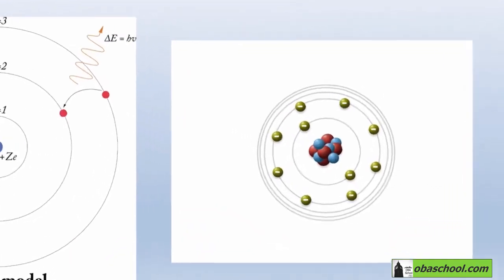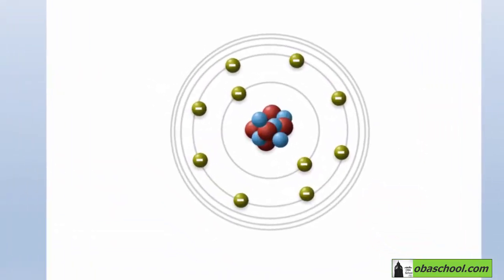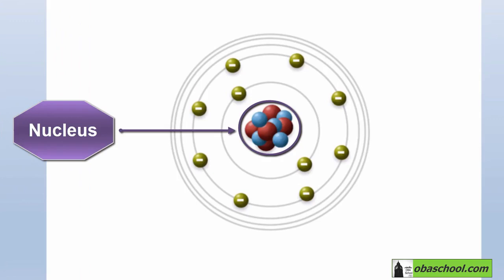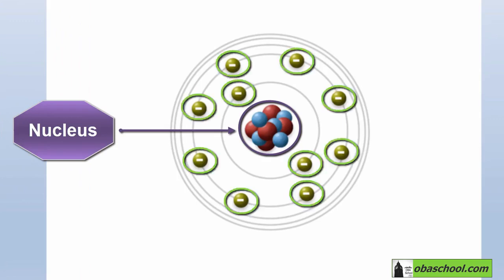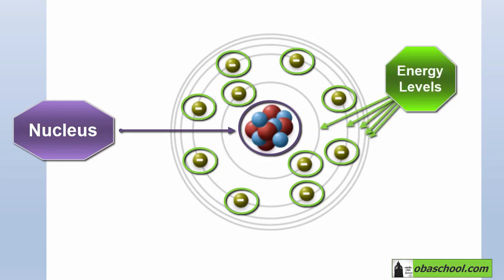This is the atomic model suggested by Bohr. Here is the nucleus, which is at the center of the atom, and these are the electrons which are orbiting the nucleus in these energy levels, or shells.